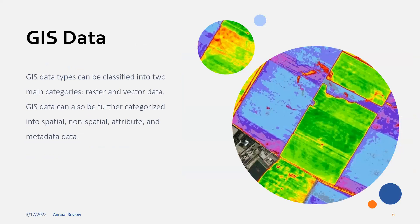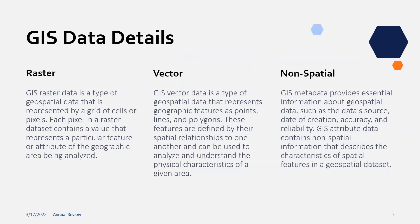GIS data types can be classified into two main categories: raster and vector data. GIS data can also be further categorized into spatial, non-spatial attributes, and metadata. Raster data is a type of geospatial data represented by a grid of cells or pixels. Each pixel in a raster dataset contains a value representing a particular feature or attribute of the geographic area being analyzed. GIS raster data you'll commonly see includes elevation data, evapotranspiration data, and temperature data, all layered out in a mosaic-like fashion.